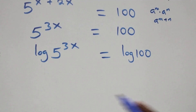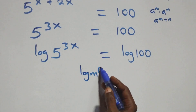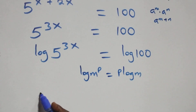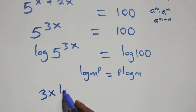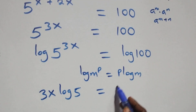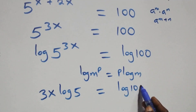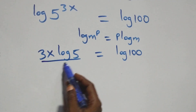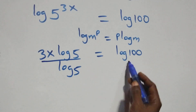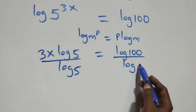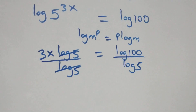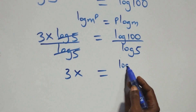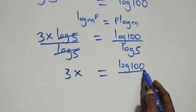Then here we apply the power rule of logarithms, bringing the exponent down. We divide this side by log 5 and also divide this side by log 5, which means log 5 cancels each other, and we have 3x equals log 100 over log 5.